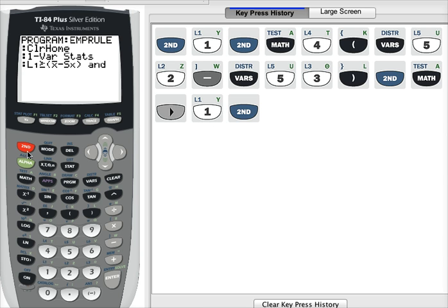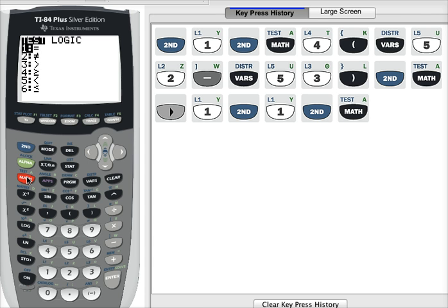Now I need to get list 1 in there again. Second 1. Less than or equal to, second, math. Less than or equal to is option 6.